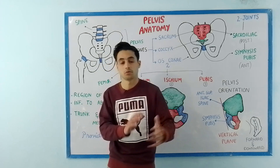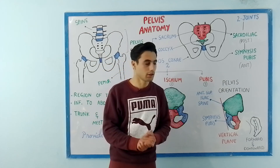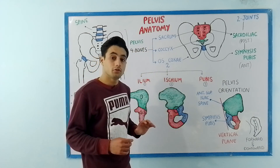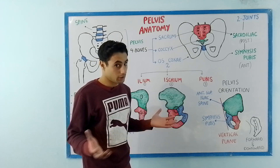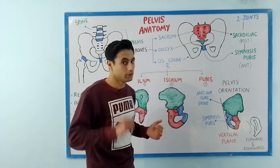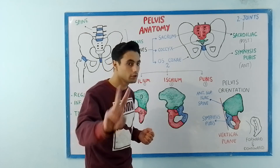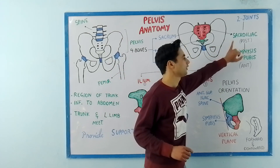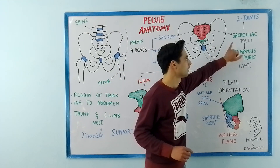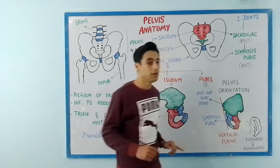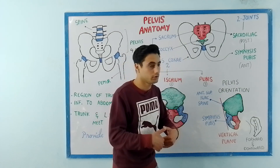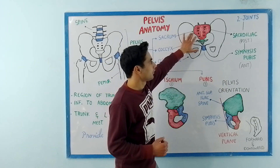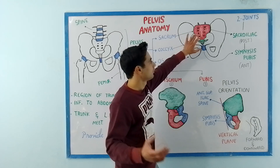Obviously you cannot see the pubic bone from the lateral side — you have to turn it around. Now, how many joints are there in the pelvic cavity? Very easy to remember: only two joints — the sacroiliac joint and the symphysis pubis.